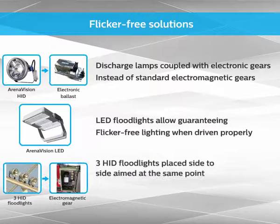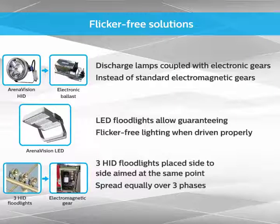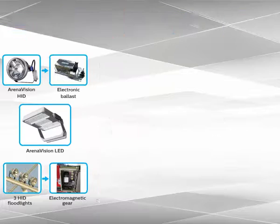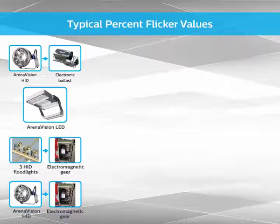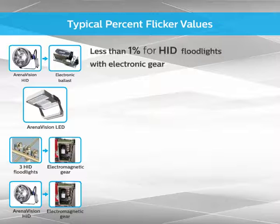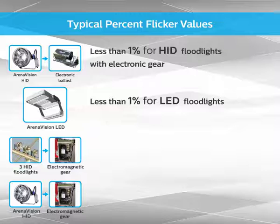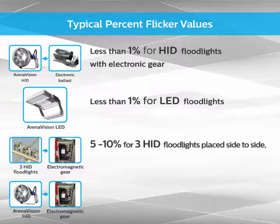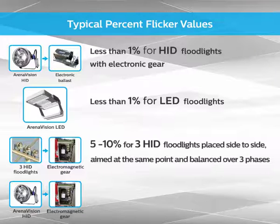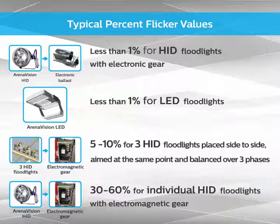Placing three HID luminaires side-to-side, aimed at the same point, and spread equally over three phases may help reduce the flicker effect without totally eliminating it. Some typical percent flicker values are: less than 1% for HID luminaires with electronic gear, less than 1% for LED luminaires, 5–10% for three HID luminaires placed side-to-side aimed at the same point and balanced over three phases, and 30–60% for individual HID luminaires with electromagnetic gear.